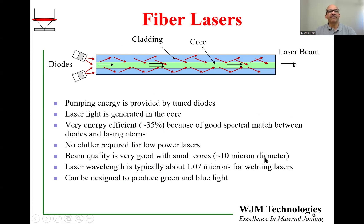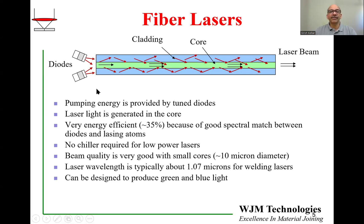The new technologies which have come up in the last 20-25 years are fiber lasers and disc lasers. The primary difference between a fiber laser and a YAG laser is that the pumping in a fiber laser is done with diodes. The benefit is that diodes can be finely tuned for absorption in the core of the fiber. We don't generate excess energy in the diodes, and they don't need as high a level of cooling as a flash lamp requires. The combination results in a very efficient laser of the order of 35%, compared to only about 4% which was common with YAG lasers.